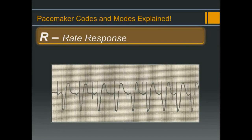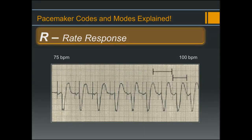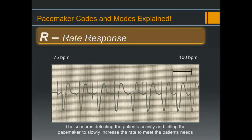Here is an example of sensor rate pacing. At the beginning of the rhythm strip the pacemaker is pacing at 75 beats per minute; as we move along, the heart rate slowly increases according to the pacemaker sensors. At the end of the rhythm strip the pacemaker is pacing at about 100 beats per minute. Sliding the 75 bpm measurement over to the 100 bpm measurement makes this more noticeable — the sensor is detecting the patient's activity and telling the pacemaker to slowly increase the rate to meet the patient's needs.